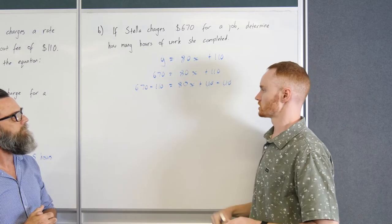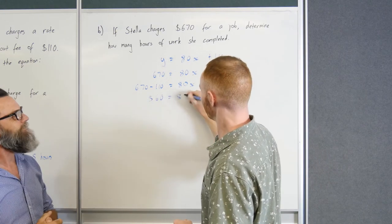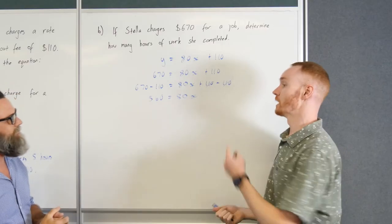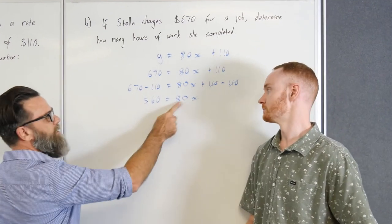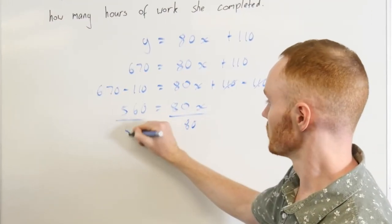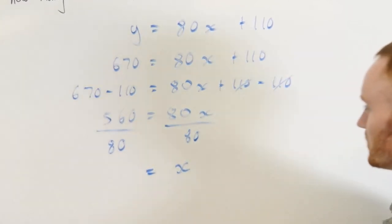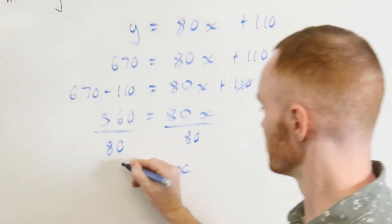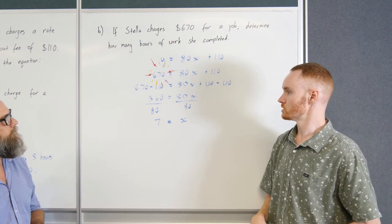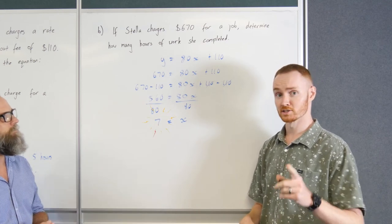So 670 take 110. That would be 560. Equals 80x. And so now I see it's down to a one-step equation. Now we can divide by the 80, right? Absolutely we can. 80 multiplied by x to get rid of that multiplied by 80. And on both sides of course. So I'm down to my x and that would give me seven hours. So if Stella charges $670 for a job, she would be working for seven hours. Fantastic stuff. And I'll write up my statement.